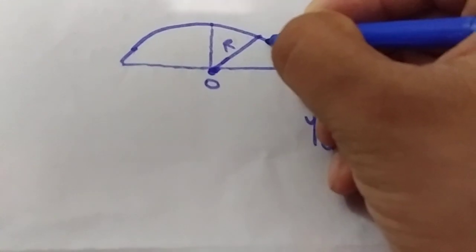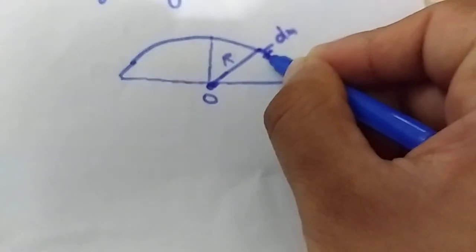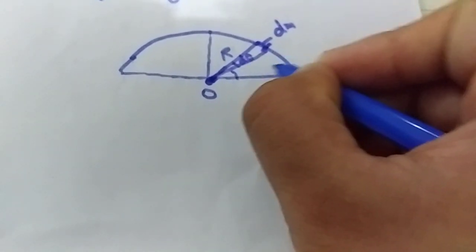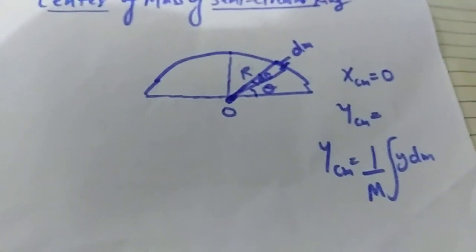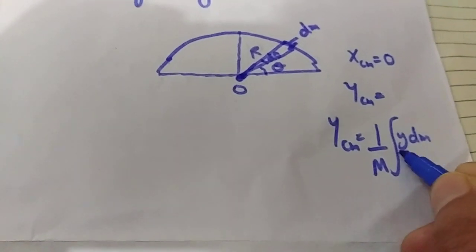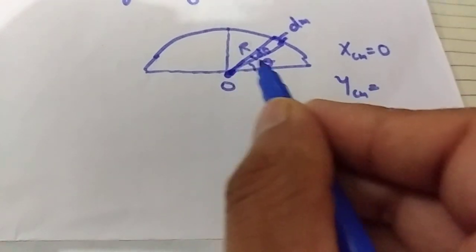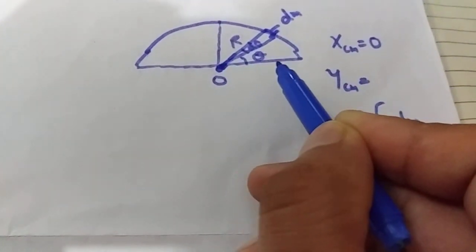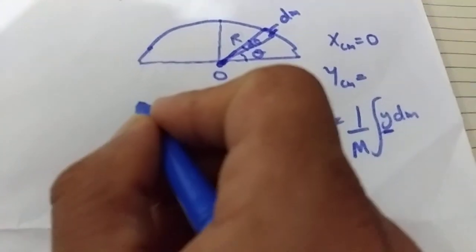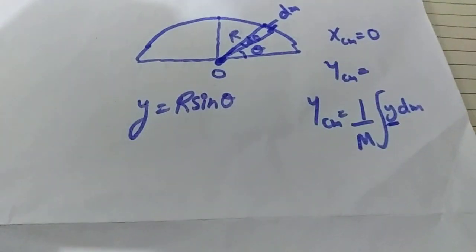Let's consider a small element here. The element has mass dm and angular width dθ. We take the angle theta measured from the x-axis. This element is making an angle of theta with the x-axis, and the y-coordinate of its position will become R sin θ. Since we are interested in the y-coordinate, the y-coordinate of this element will be R sin θ.